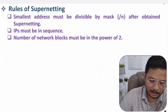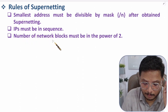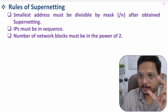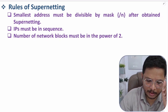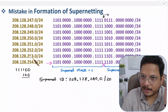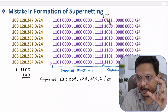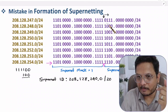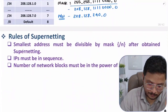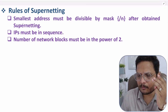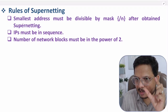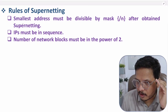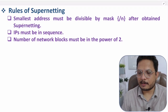Rule 2: The IPs should be in sequence. Rule 3: The number of network blocks must be a power of two — when combining subnets, the count must be 2, 4, 8, 16, etc. In our valid example we had eight blocks (a power of two), which was correct. The error occurred only because the smallest IP was not divisible by the supernet mask. So whenever forming a supernet, remember these three rules: the mask must divide the lowest IP evenly, subnets must be in sequence, and the count must be a power of two.